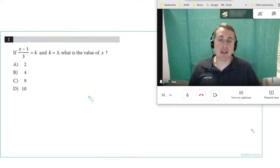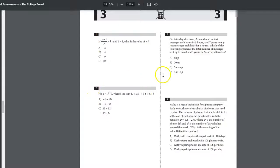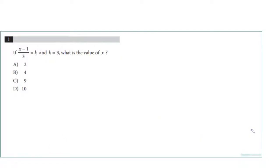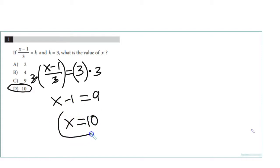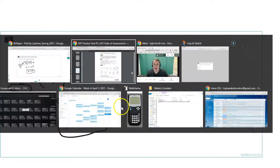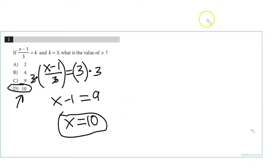By the way, we work through this kind of quickly because in this section you're only supposed to have 25 minutes with no calculator. So (x-1)/3 equals k, k equals 3. What's the value of x? I fill in 3 for k, times both sides by 3 to get rid of the denominator. We get x minus 1 equals 9, so x equals 10. I don't necessarily recommend you write x equals 10 because that wastes time. Just circle it and bubble all your answers at the end.